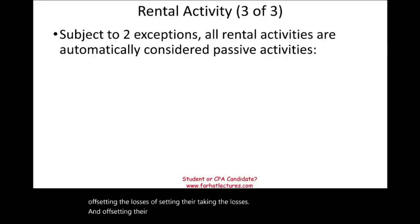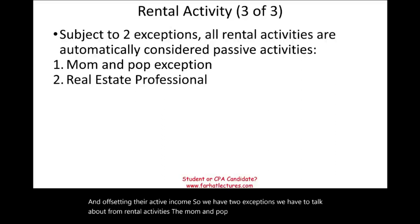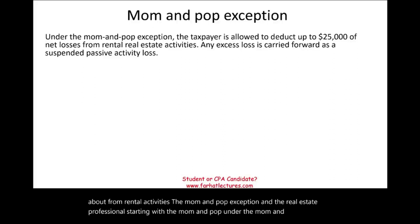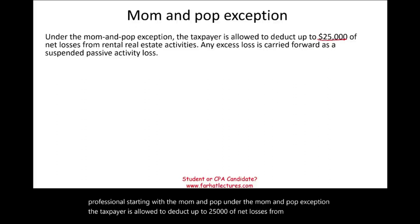We have two exceptions to discuss from rental activities: the mom and pop exception, and the real estate professional. Under the mom and pop exception, the taxpayer is allowed to deduct up to $25,000 of net losses from rental real estate activities. Any excess loss is carried forward as a suspended passive activity loss for a future year.